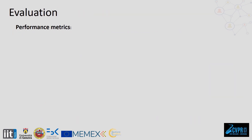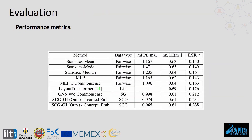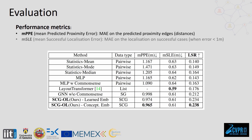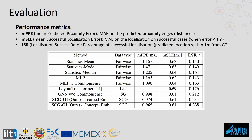We compare our approach against other methods using three performance metrics. The mean predicted proximity error is the mean absolute error on the pairwise distances. The mean successful localization error is the mean absolute error from the predicted location to the real location, calculated only for successful localizations — that is, when the error is below 1 meter. The localization success rate is the percentage of objects successfully located within 1 meter from the ground truth position.